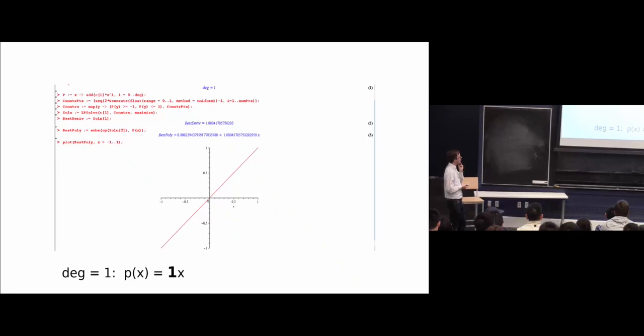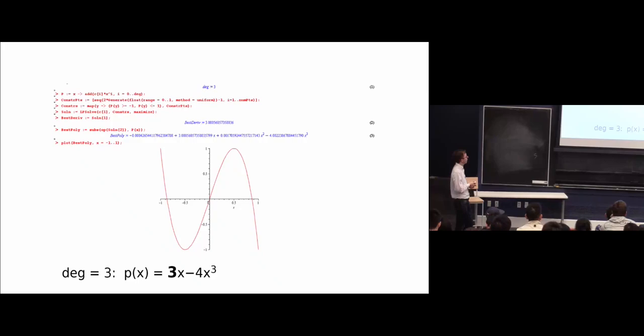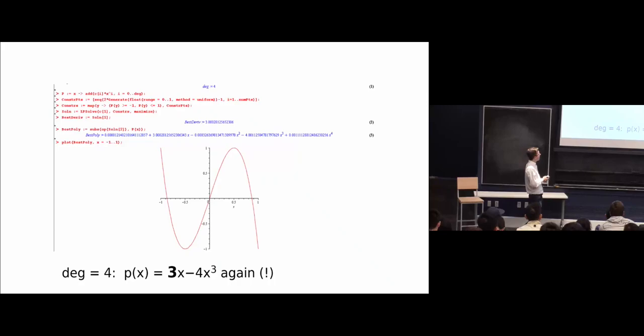This is one. Makes sense. Pretty much looks like the best solution is p of x equals x, which has derivative one at zero. Okay, here's the solution for degree equals two. This looks a little weird. Looks like it's half plus one x minus 0.5x squared. Anyway, the maximum slope here is one. Okay. Three we did. The maximum slope is three.